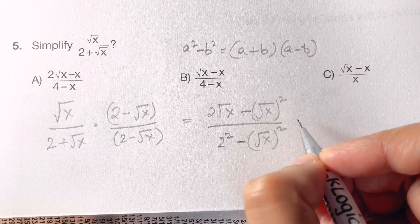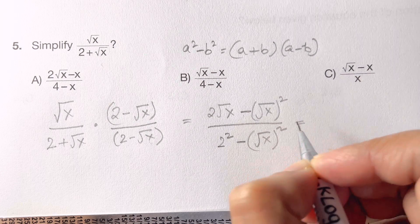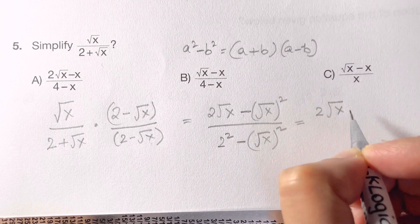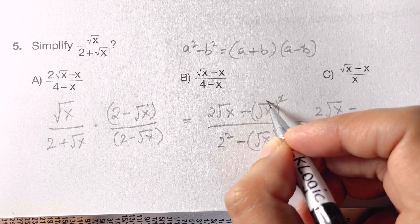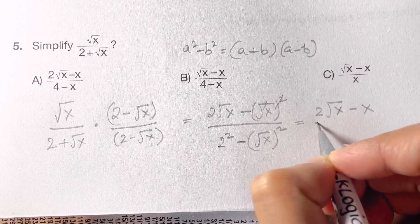So here, what do we have now? You have 2 root x minus, square and root gets cancelled, you have minus x over...